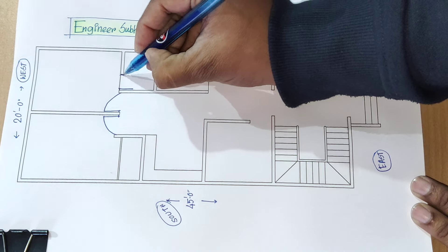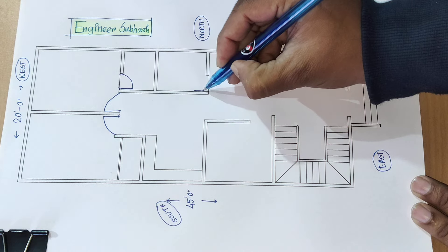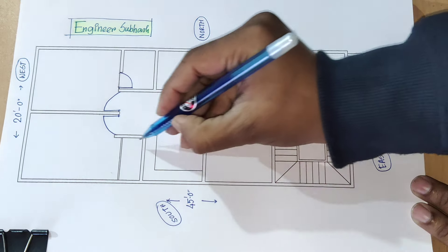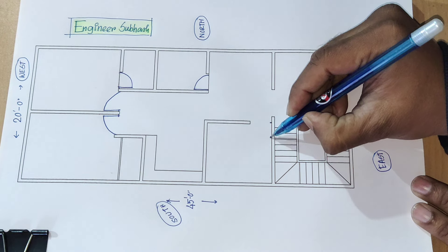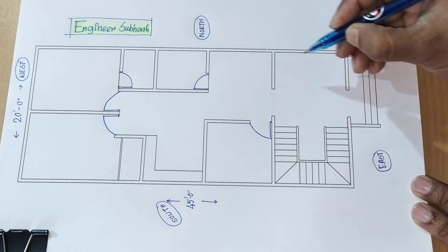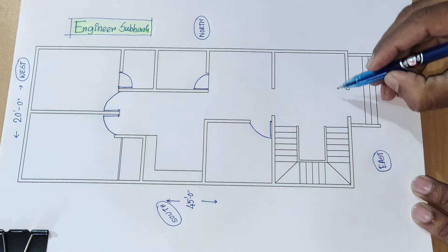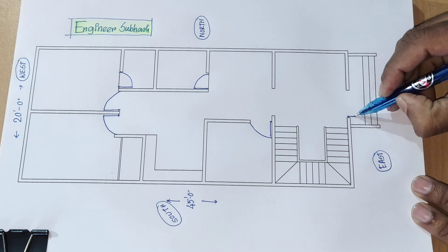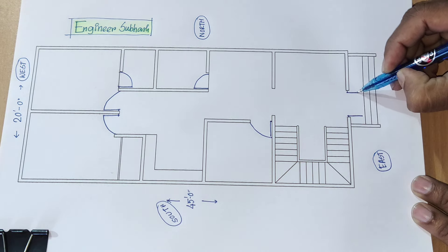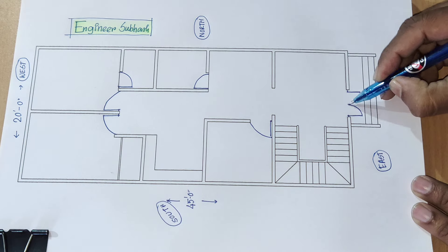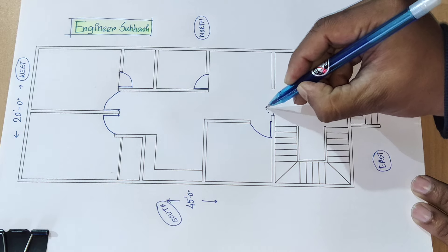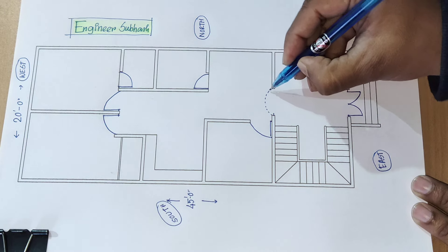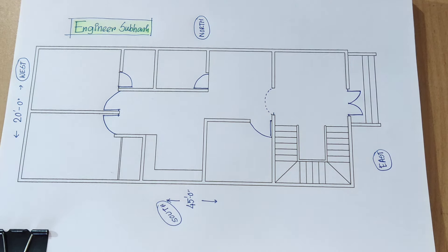Attach toilet, common bath and latin. Here is a cupboard, here is a door, study room. Here is a door — we can open the door if you want to open it, there is no problem. Here is arch type window, this window inside we will see.